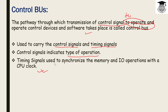The system bus carries information from one component to another. It carries data, address, or control signals, and one component of the computer can interact with another component via the bus. The system bus is composed of three buses: the address bus, data bus, and control bus.